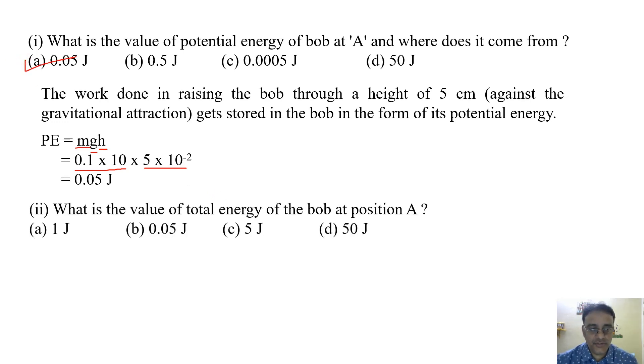Now we will see the second question. What is the value of total energy of the bob at position A? So jab position A peh jab pohuncha to waha peh potential energy 0.05 joules hai but kinetic energy kiya hooga? Because the motion will not remain, it will be 0. And the total energy is the sum of these two that is 0.05 J. So the correct option is option B.